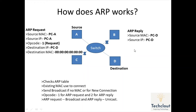In the ARP reply, the source IP is Computer D's IP. The OP code is 2, indicating an ARP reply. The destination MAC is Computer A's MAC address, because Computer D now knows the MAC address of the ARP request source machine. It also includes the destination IP of Computer A. ARP request is always a broadcast message, and ARP reply is always a unicast message.